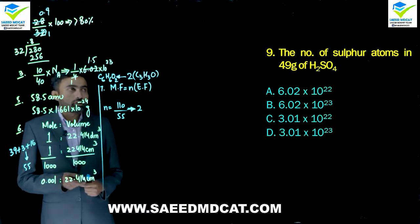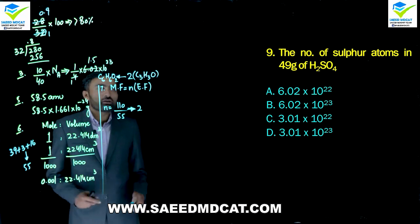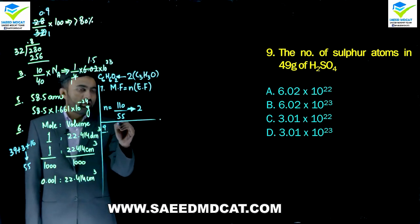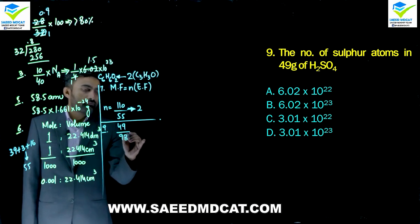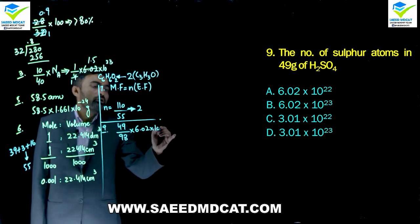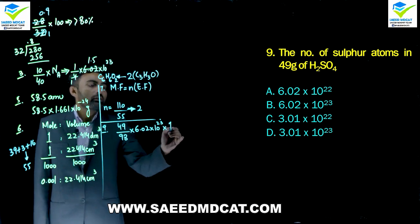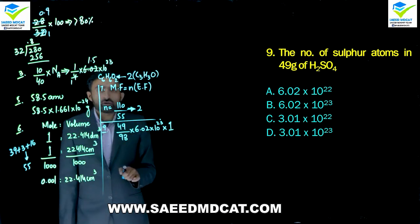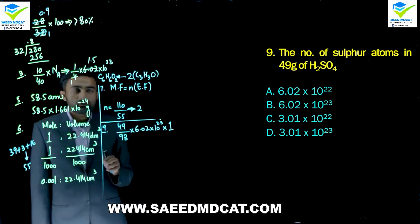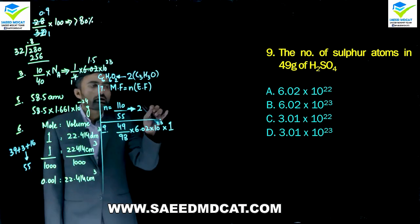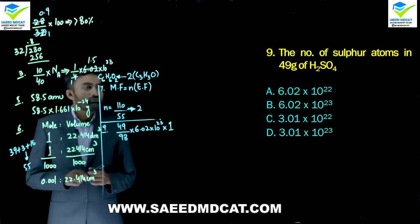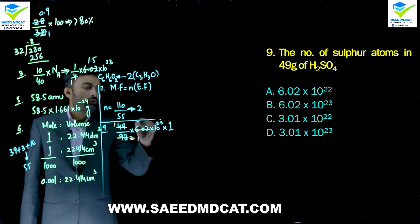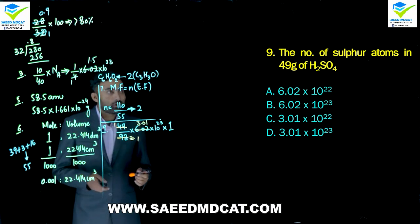Question 9: Number of sulfur atoms in 49 grams of sulfuric acid (H2SO4). Formula: mass ÷ molar mass × Avogadro's number × number of sulfur atoms per molecule. Molar mass of H2SO4 = 98. Sulfur atoms per molecule = 1. So: 49/98 × 6.02×10²³ × 1 = 0.5 × 6.02×10²³ ≈ 3.01×10²³. Delta option is correct.